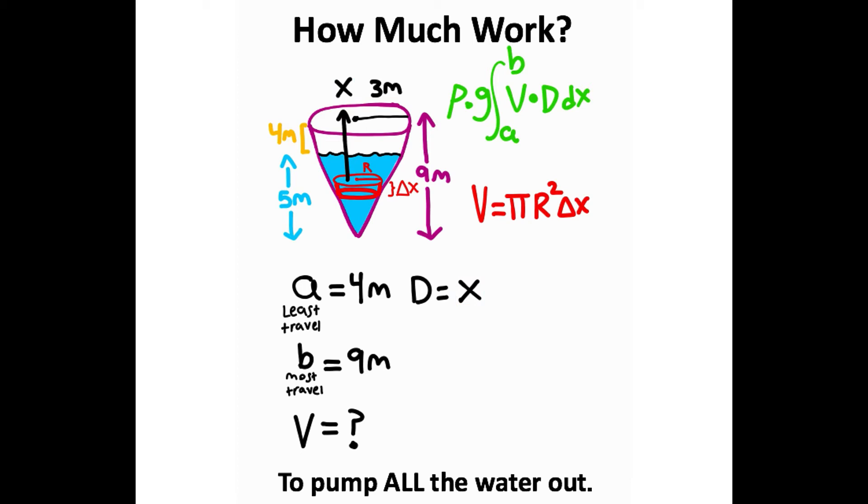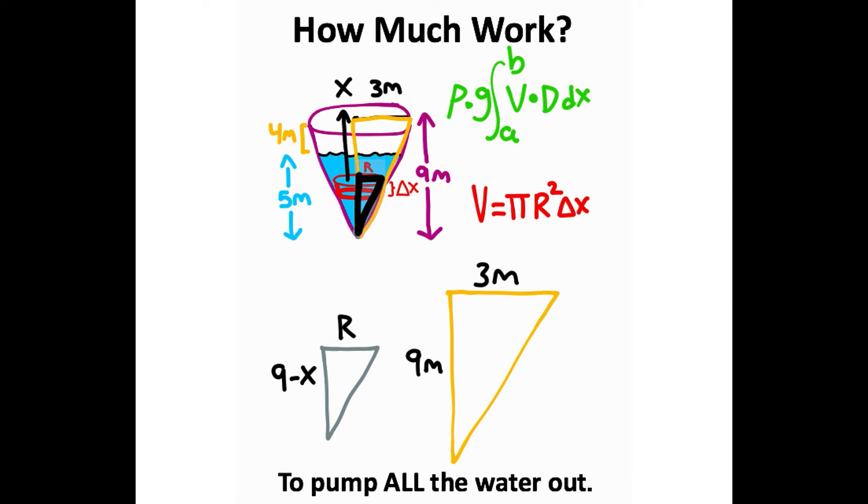Now what we want to do is figure out what r is going to be. This radius, in my opinion, is the most difficult part of this problem because it's not super intuitive. What you want to do is draw two right triangles inside the cone. These two right triangles are going to be similar triangles, so you can draw a proportional equation with them.